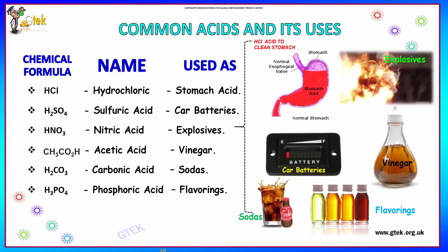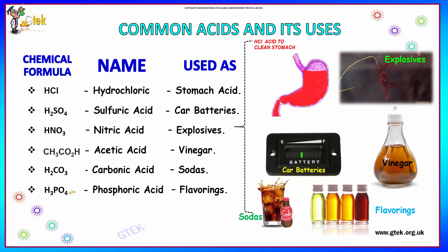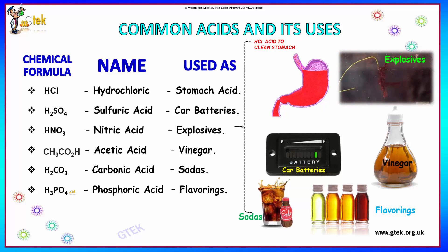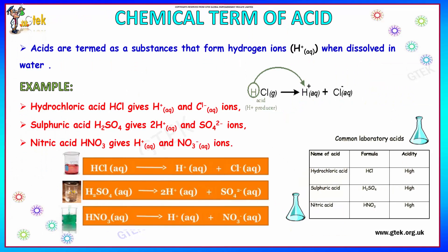These are the chemical formulas available — you should note them down. Now we'll talk about the chemical definition of an acid. Acids are defined as a substance that forms hydrogen ions when dissolved in water.